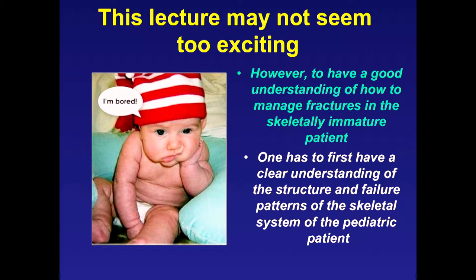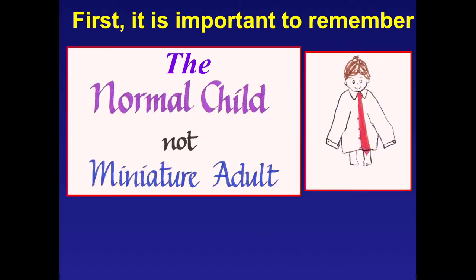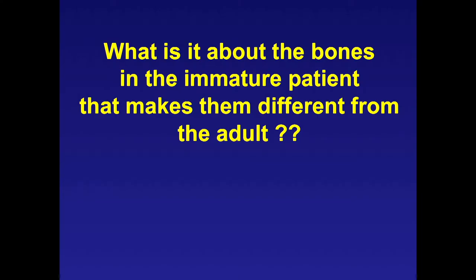We're going to go back to the basic science you learned in medical school, with examples of why it's very important to review this. Remember, the normal child is not a miniature adult, so you need different principles. You can't just take adult principles and make them smaller. So what is it about bones in the immature patient that makes them different from the adult?